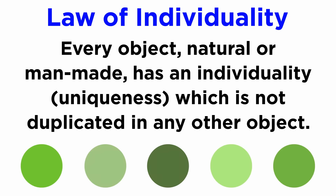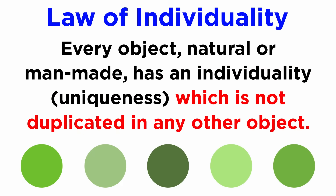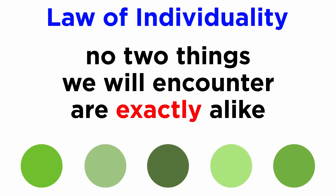The first principle is the law of individuality. It states that every object, natural or man-made, has an individuality—a uniqueness which is not duplicated in any other object. In other words, no two things in this universe are alike, even when they are manufactured in the same machine one after the other.